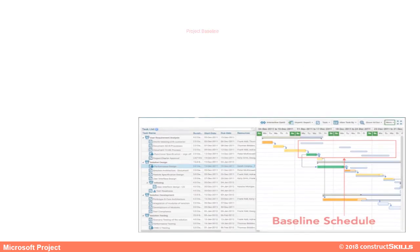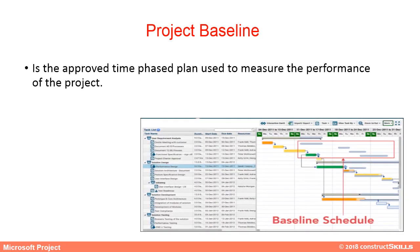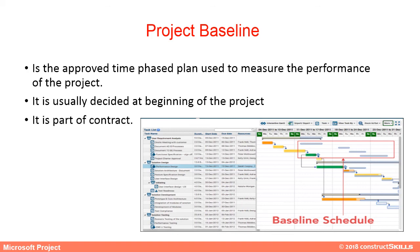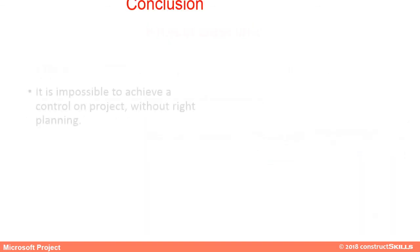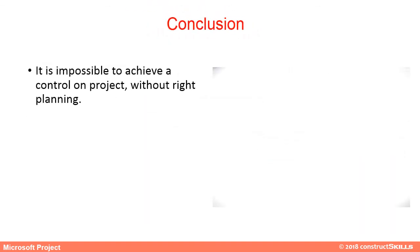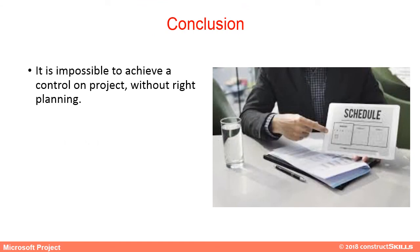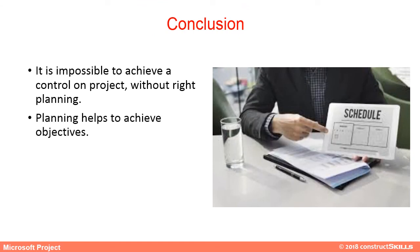The project baseline is the approved, time-phased plan used to measure the performance of the project. It is usually decided at the beginning of the project and is part of the contract. It is impossible to achieve control on a project without proper planning. Planning helps achieve objectives, and MS Project is a tool that helps achieve planning objectives.